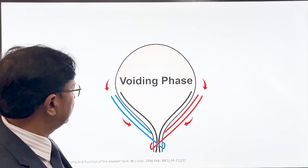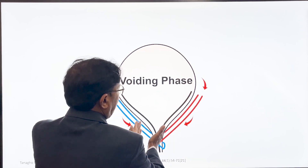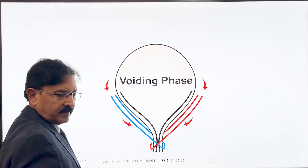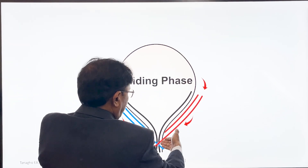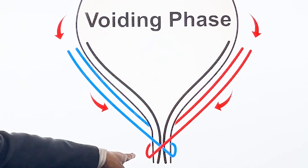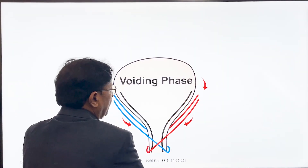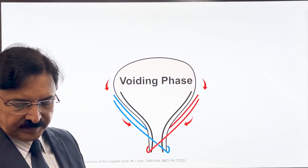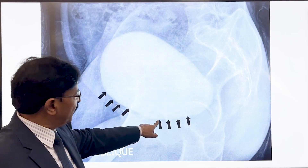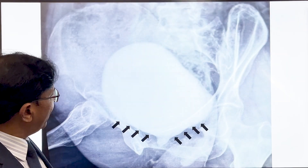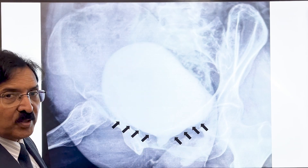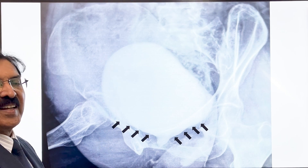When the patient voids, the bladder base becomes funnel-shaped. As the dome of the bladder contracts, the loops become oblique and then loose, and as they slide down due to this obliquity, the outlet opens and the patient is able to void. You may have noted that in a filling cystogram the posterior wall of the bladder is flat, whereas in a voiding MCU both the anterior and posterior walls become funneled. This funneling at the base of the bladder is responsible for disentanglement of the detrusor loops.